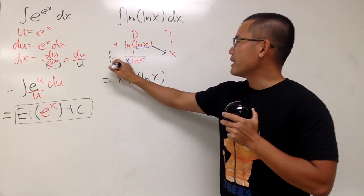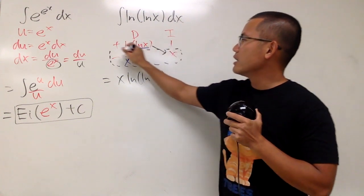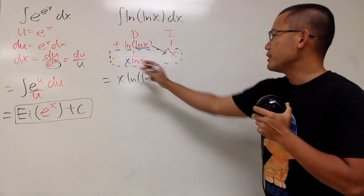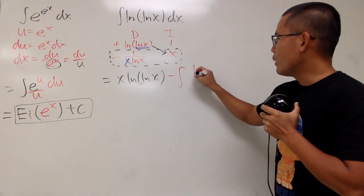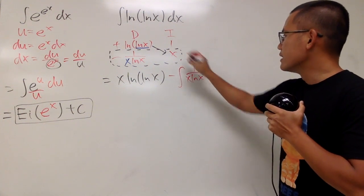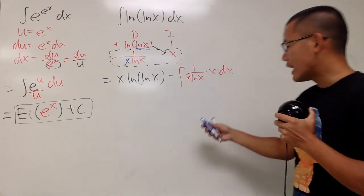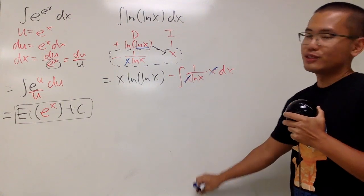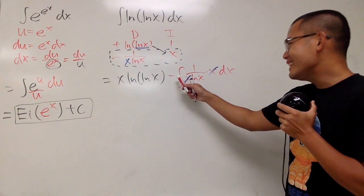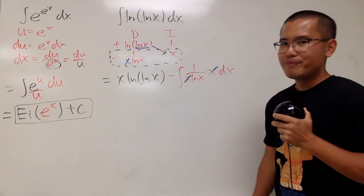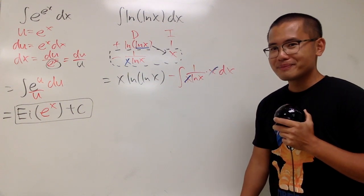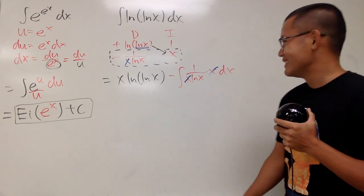Then, we multiply this and that. This is still an integral, though, so let's put that down. And this is a minus integral, and we have 1 over x ln of x times this x. And of course, we have the dx. Of course, we know that this and that cancel out, and we get the integral of 1 over ln of x, which is what? Li of x. Yes.